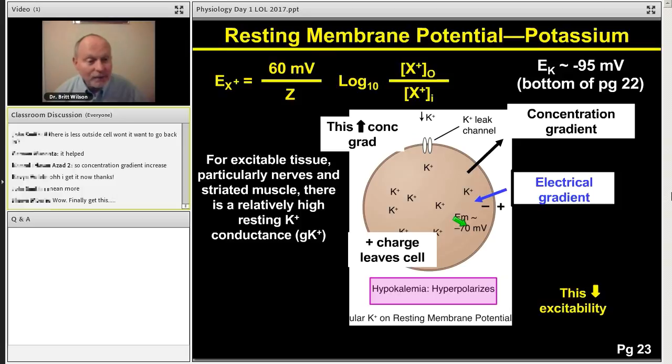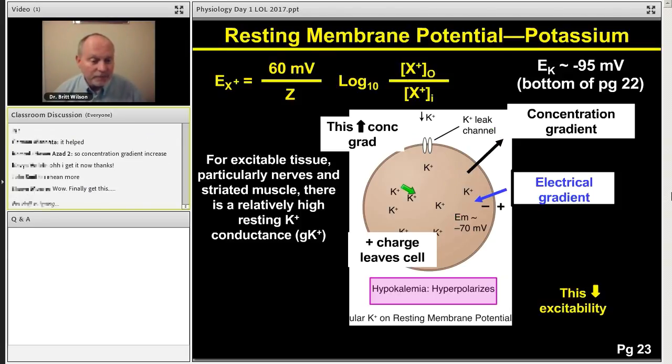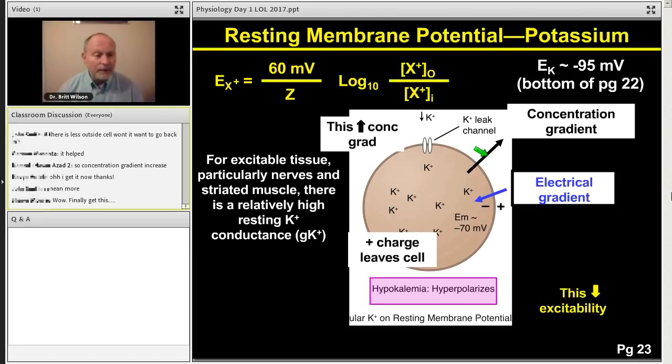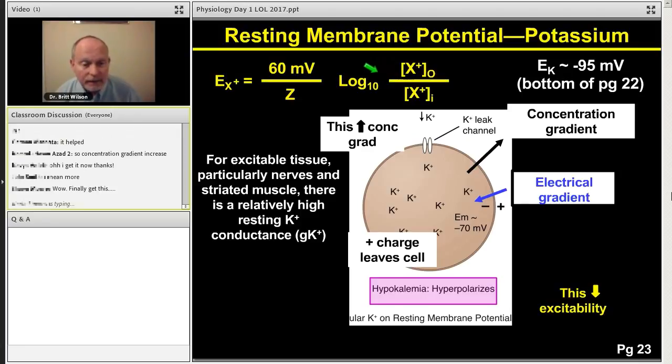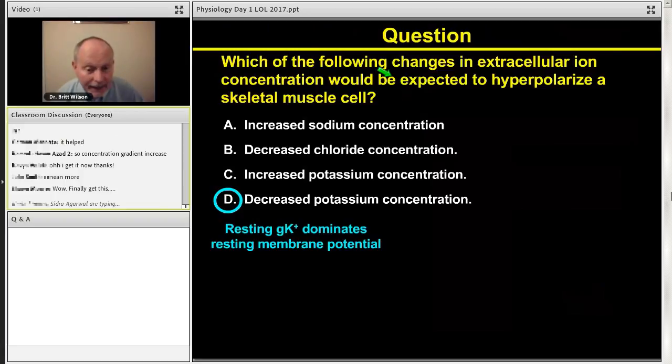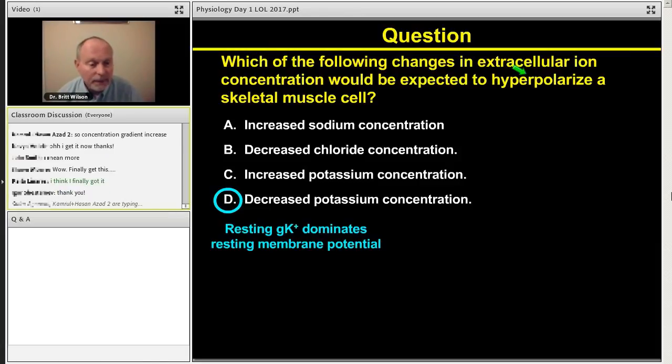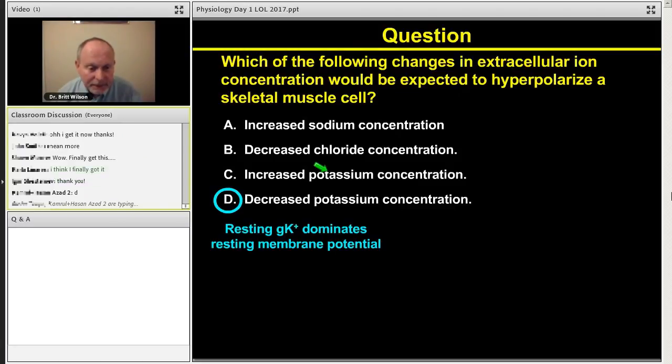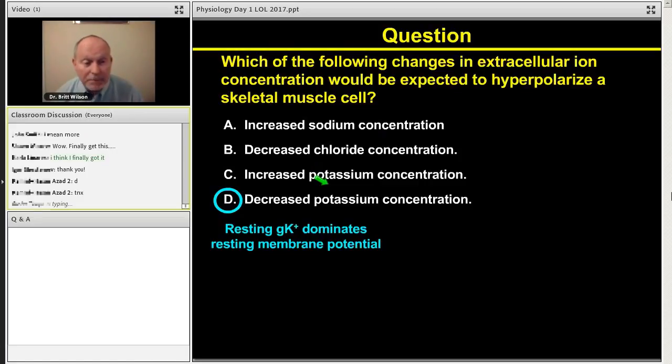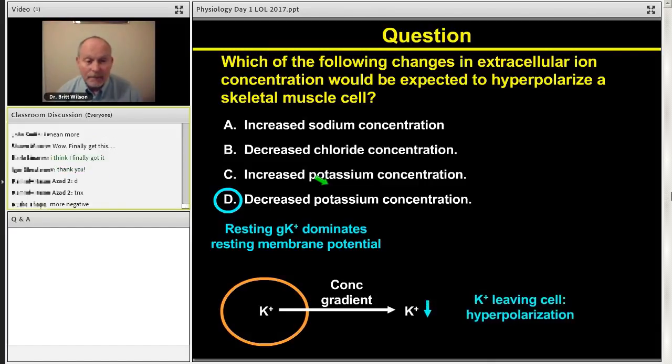You're only working with stuff you already know. You already know the concentration gradient. You know the charge of potassium. Right? Everybody knows it's positively charged. You should know the concentration gradient cold. Like I said, those four ions, you should know the concentration gradient. So you're just working with stuff you already know. And you get it right every single time. Makes life easier. For the math magicians out there, again, just plug it into the NERDS equation. So I go back. We're going to hyperpolarize the skeletal muscle cell. We know A and B are wrong. Because it has to be potassium. Because that's the key player.